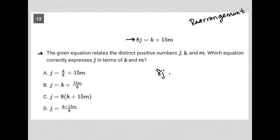We have 8j equals k plus 15m. All I want to do is get j alone. It almost is isolated. The only issue is the 8 in front of it. So I'm going to divide by 8. And I'm going to divide everything by 8. So I'm going to divide this entire right side by 8 as well.